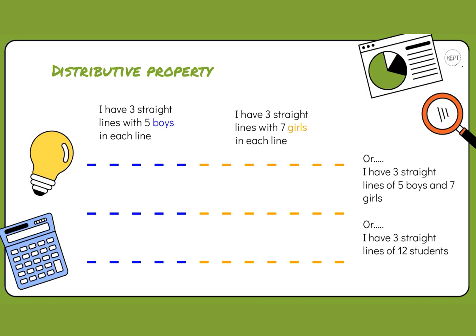We can say that we have three straight lines with five boys in each line and three straight lines with seven girls in each line. If I wanted to combine these, I would say three straight lines of the boys, which equals five, plus three straight lines of the girls, which equals seven.